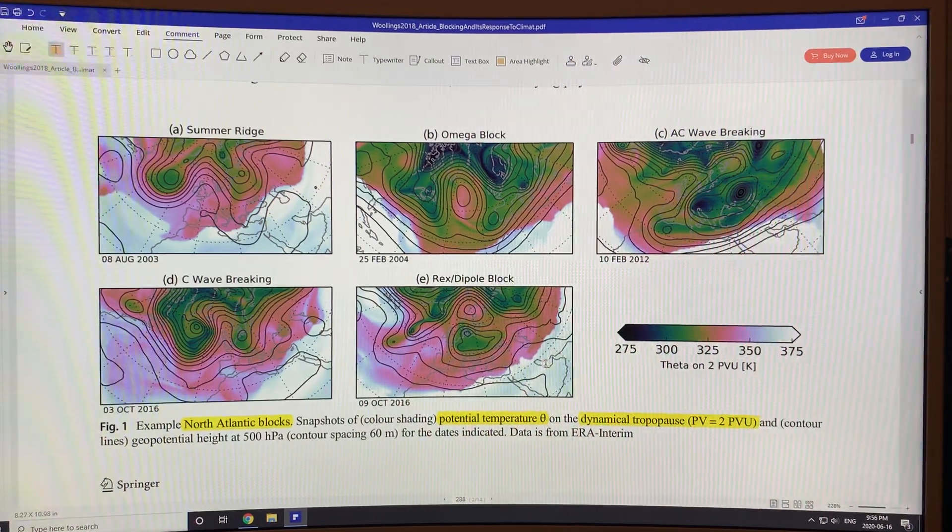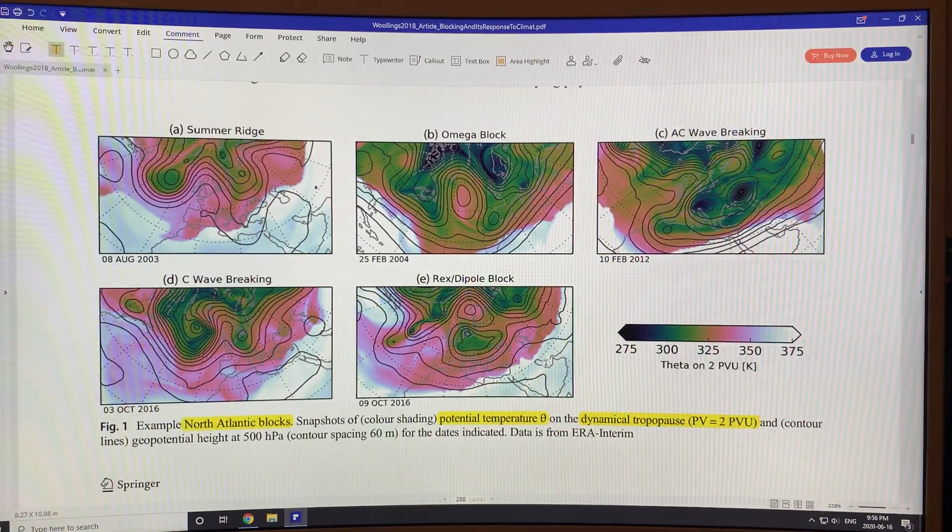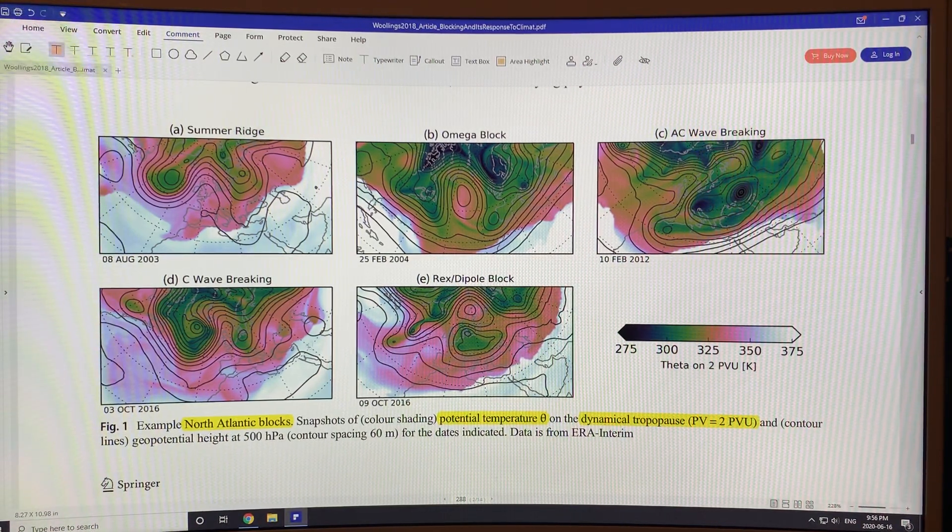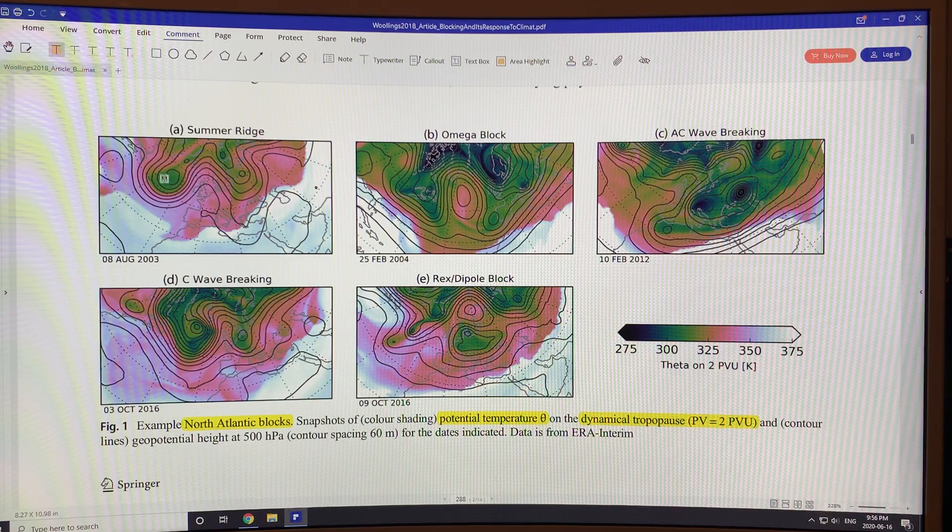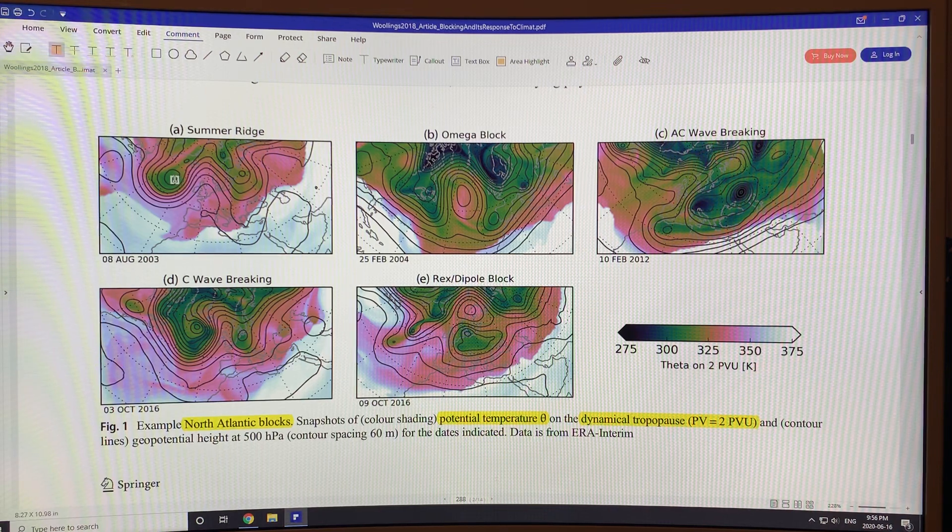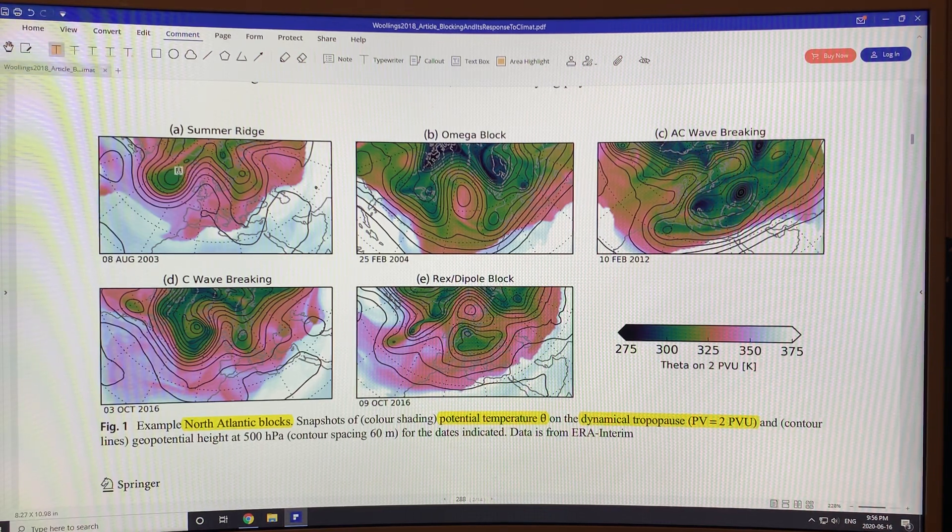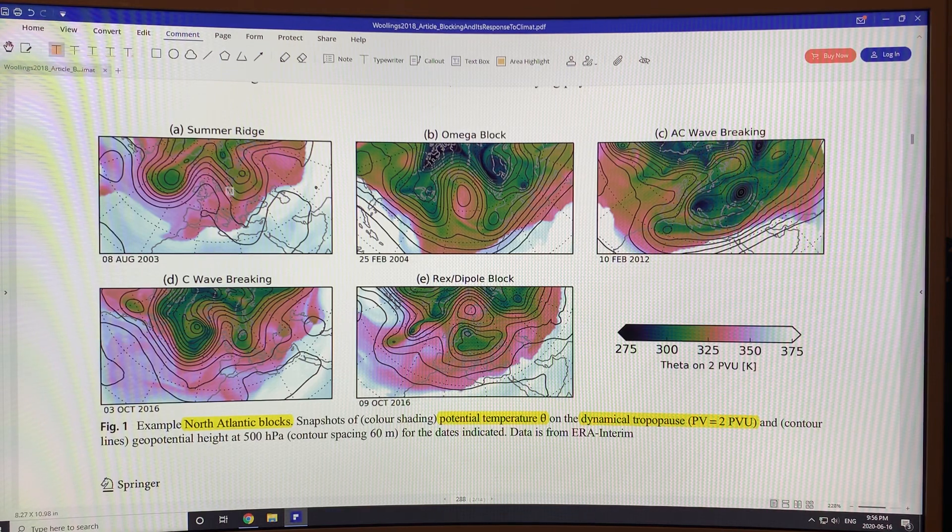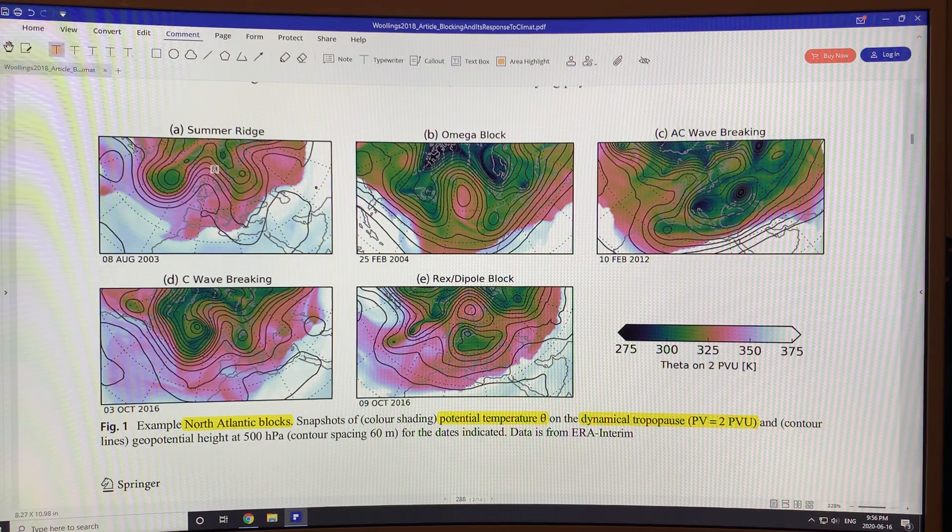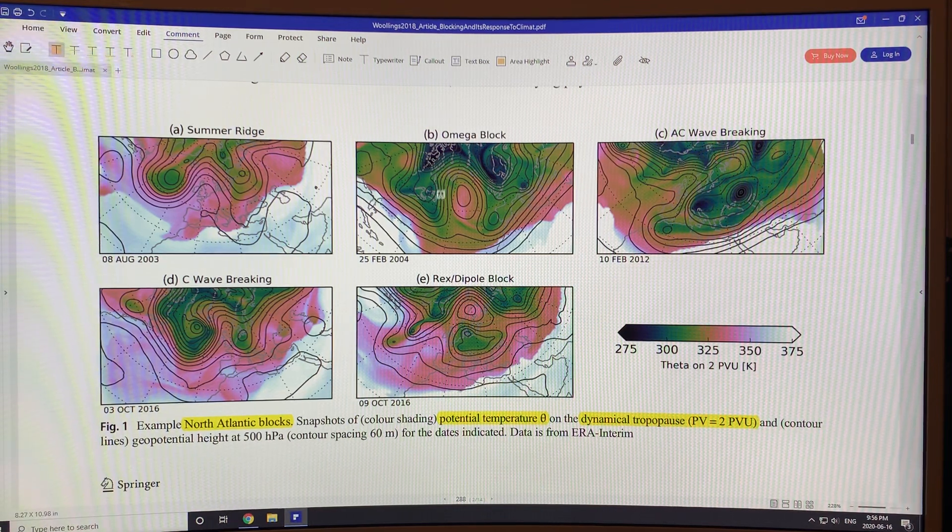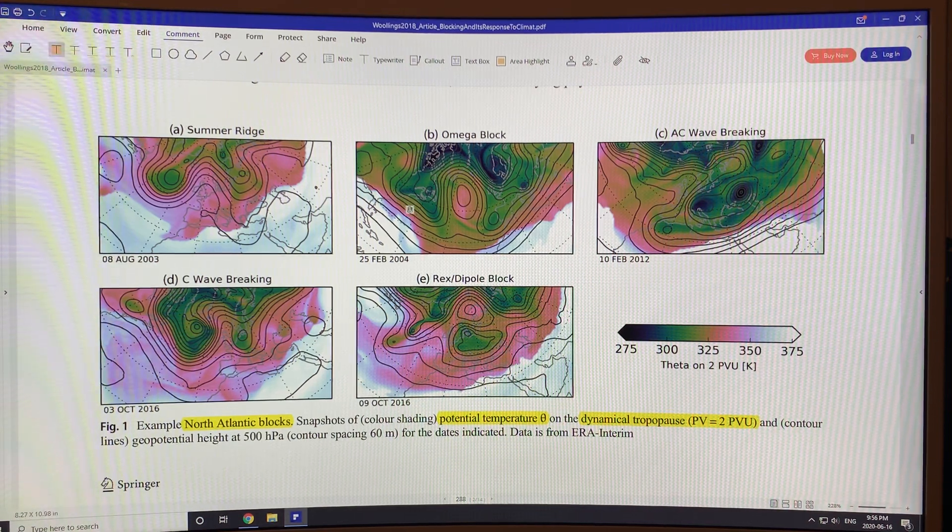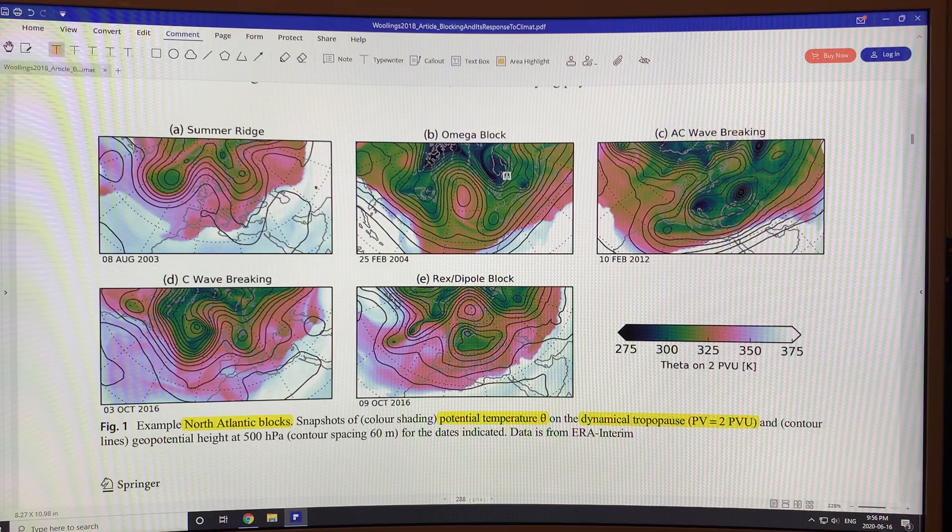Although there's no hard and fast definition and agreement by meteorologists on blocking, there's these five main configurations going from the simplest ridge with two troughs and symmetry. The temperature is the color, so these are colder areas connected to the Arctic, these are warmer areas. When the troughs deepen and the ridge goes further up, you can get these closed contours and this is the type of block called the Omega block.